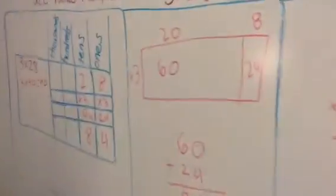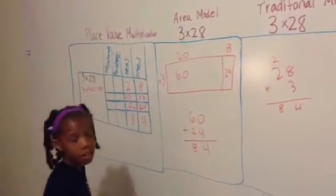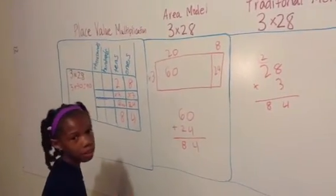Very good. Multiplying both of those parts by 3 gave you the product. What's the product mean? Well, the product is the answer to a multiplication problem. Very good.